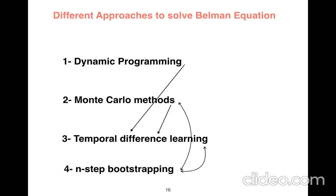The third approach is temporal difference learning, which is just a combination of dynamic programming and Monte Carlo methods. The last approach is n-step bootstrapping, which is a combination of Monte Carlo methods and temporal difference learning. So all these methods are just different tools to solve Bellman equation.